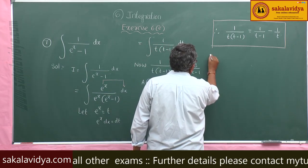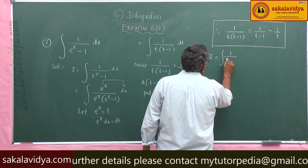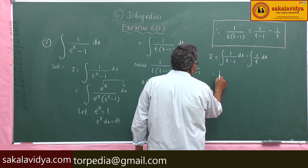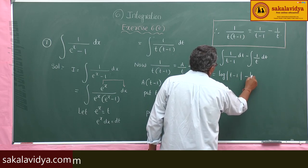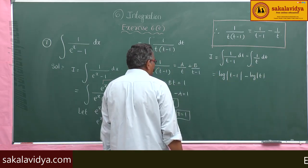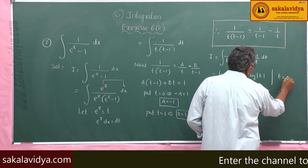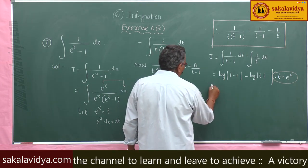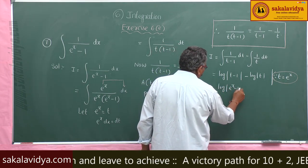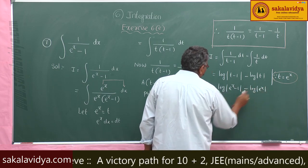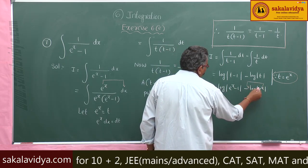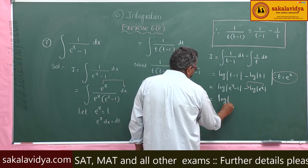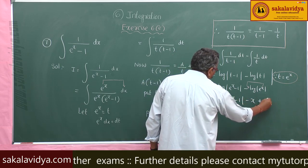Integrating: I equals integral of 1 by (t minus 1) dt minus integral of 1 by t dt, which gives log|t minus 1| minus log|t|. Since t equals eˣ, this becomes log|eˣ minus 1| minus log|eˣ|. Since log eˣ equals x (as log e equals 1), the answer is log|eˣ minus 1| minus x plus constant of integration.